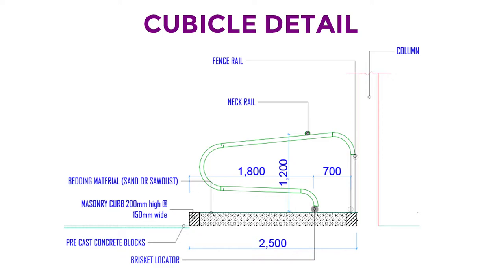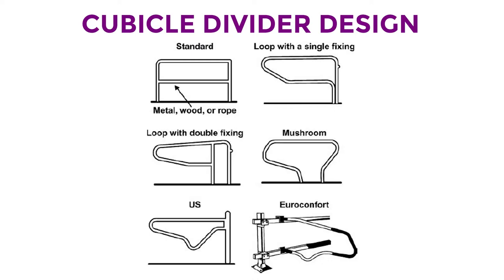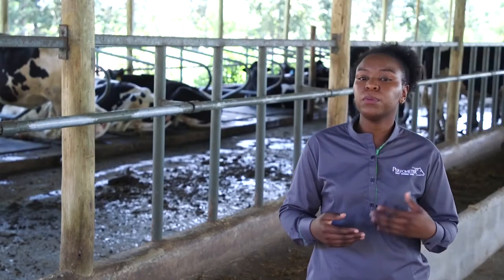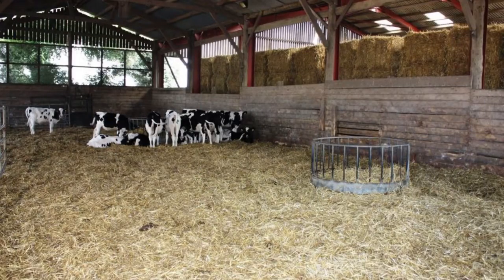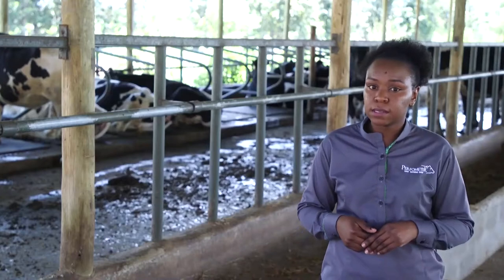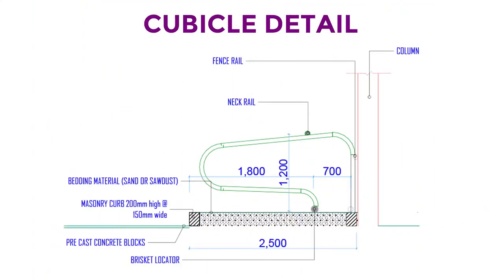As for the bedding, I mentioned the appropriate materials in lesson one. The second item is the cubicle divider designs. The image on your screen shows various designs, and whichever you choose depends on you. The main function of dividers is to separate sleeping quarters, which enables you to fit more cows in a smaller area, in comparison to loose housing, which is generally a resting area without cubicles. Loose housing is best for heifers and yearlings. The cubicle dimensions are indicated on the drawing provided, and the effective height of the divider is about 1.2 meters.